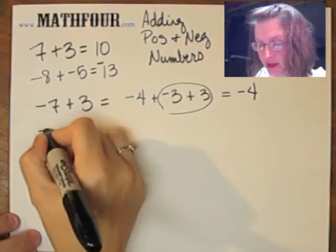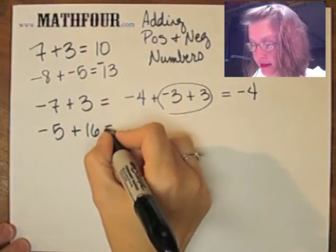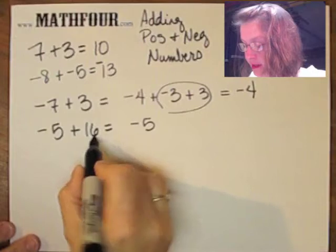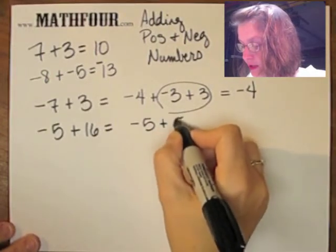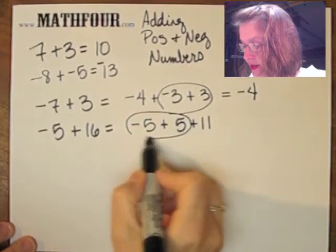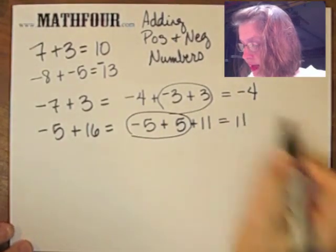Likewise for negative 5 plus 16. You have negative 5. 16 is the bigger number, so you can break it up into positive 5 and positive 11. These two cancel and there's your result.